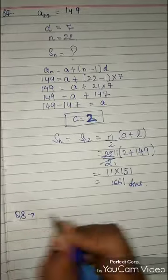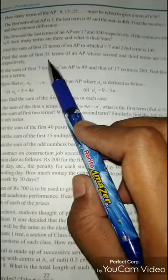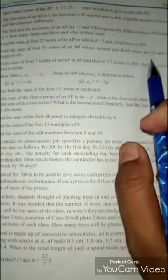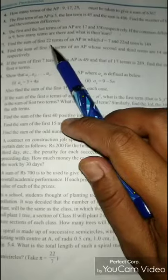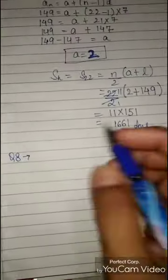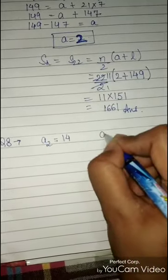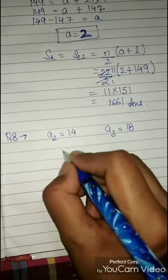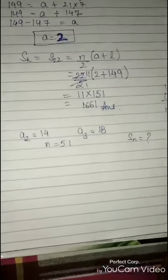Question 8: Find the sum of first 51 terms of the AP whose second and third terms are given. Given: a2 = 14, a3 = 18, and n = 51. We have to find S51.